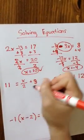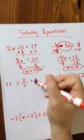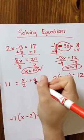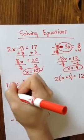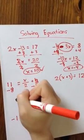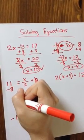Okay, in this one, same thing. I need to undo my addition or subtraction first. So 8 is being added. I'm going to undo that by subtracting 8, and then I'm going to subtract 8 from this side. 11 minus 8 is 3.